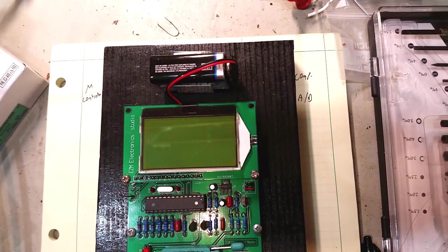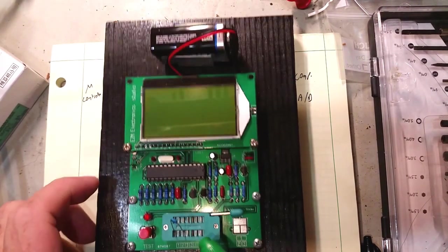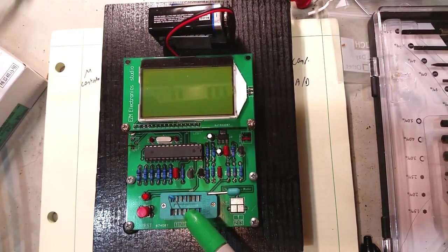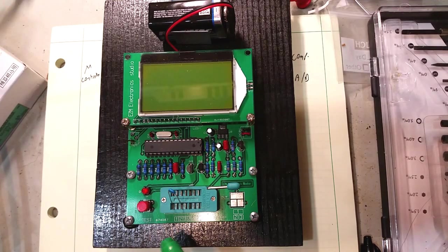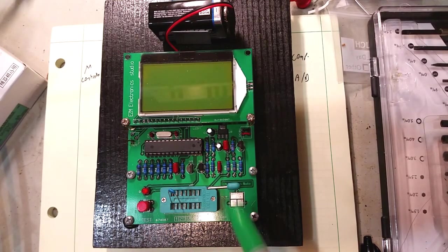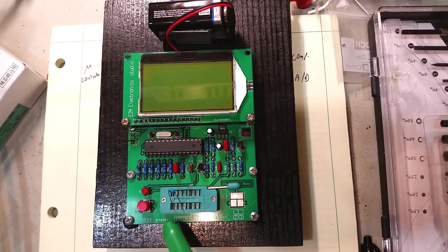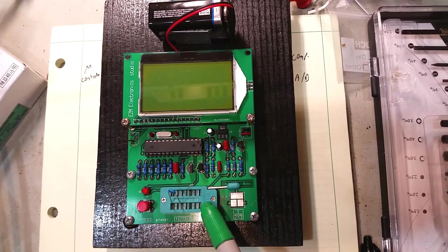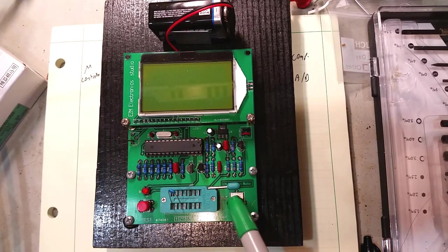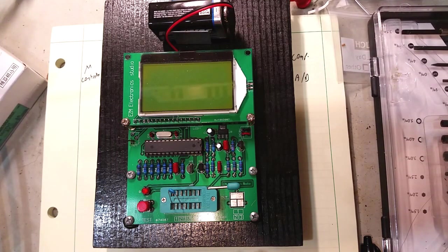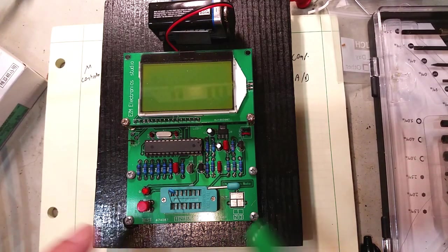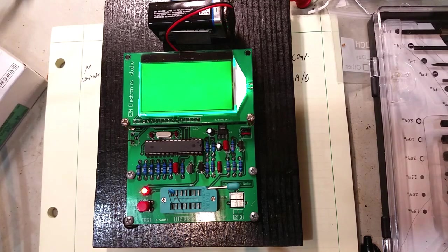Right now I've got a 0.1 microfarad capacitor put into the zero insertion force socket. You can also connect it to three test points that are on the pins in the zero insertion force socket, or there's three test points over here that you can use some other kind of connector soldered to. Basically we put the capacitor in, we push the button.